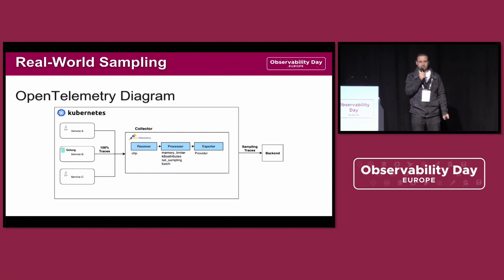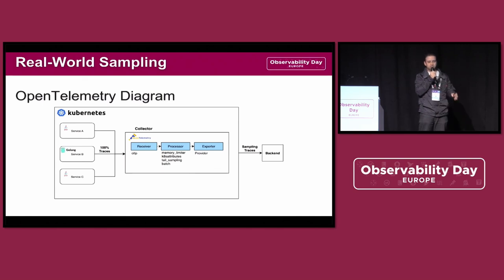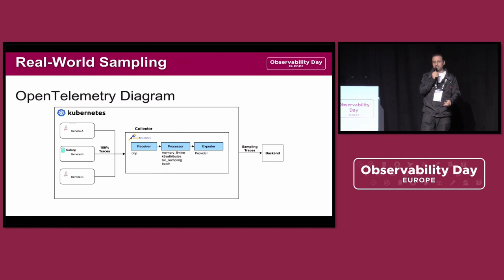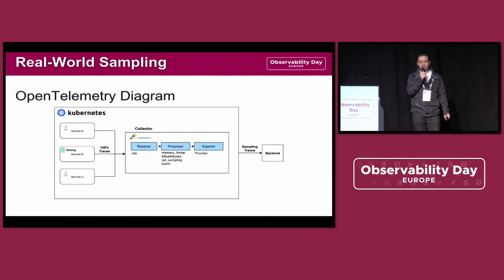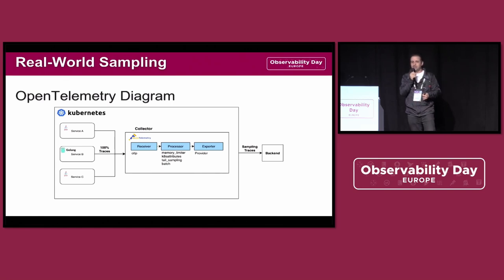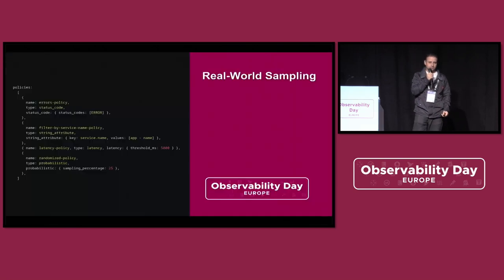Here we have a simple diagram about the OpenTelemetry setup where 100% of the traces from applications are sent to our collector, but the policy is applied and only sampled traces are sent to our backend.